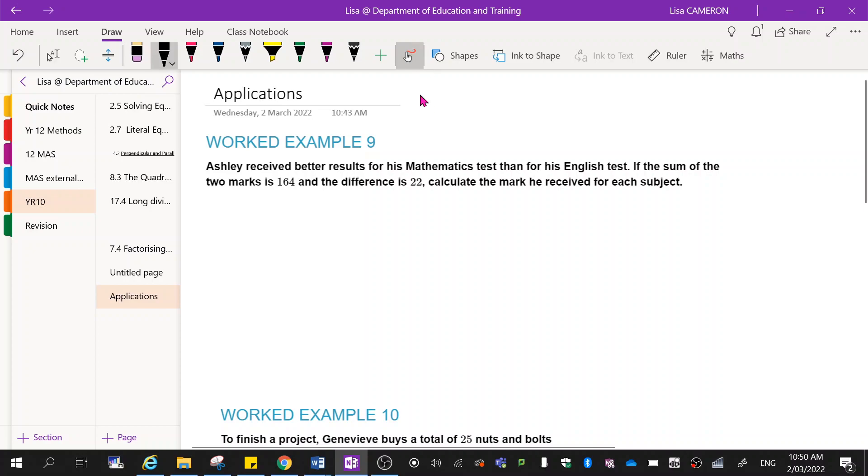Now the only real trick here is setting up your equations. So first things first, she receives better marks for the maths test. Then for English, the sum of the two marks is 164. So that would imply to me that maths plus English is equal to 164.